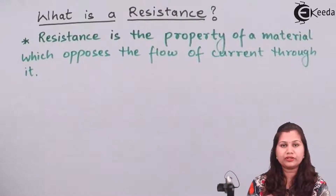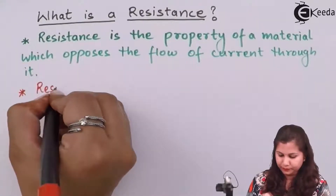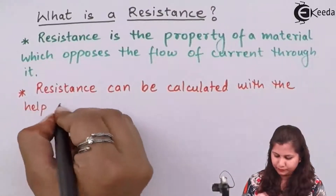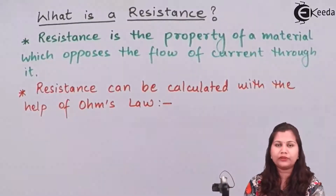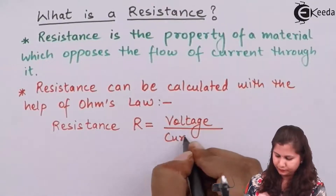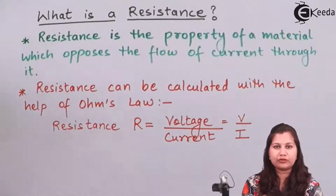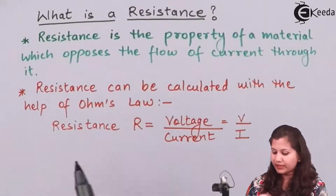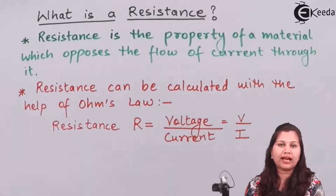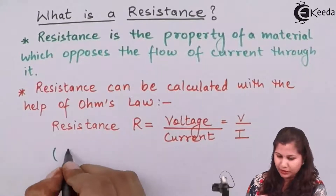Now if we want to measure the resistance, it can be calculated with the help of Ohm's law. According to Ohm's law, suppose V is the voltage across the material connected in the electrical circuit and I is the current flowing through it. Resistance is defined as the division of voltage by current when the temperature is kept constant. This formula — Ohm's law — is valid only when we consider temperature as constant.